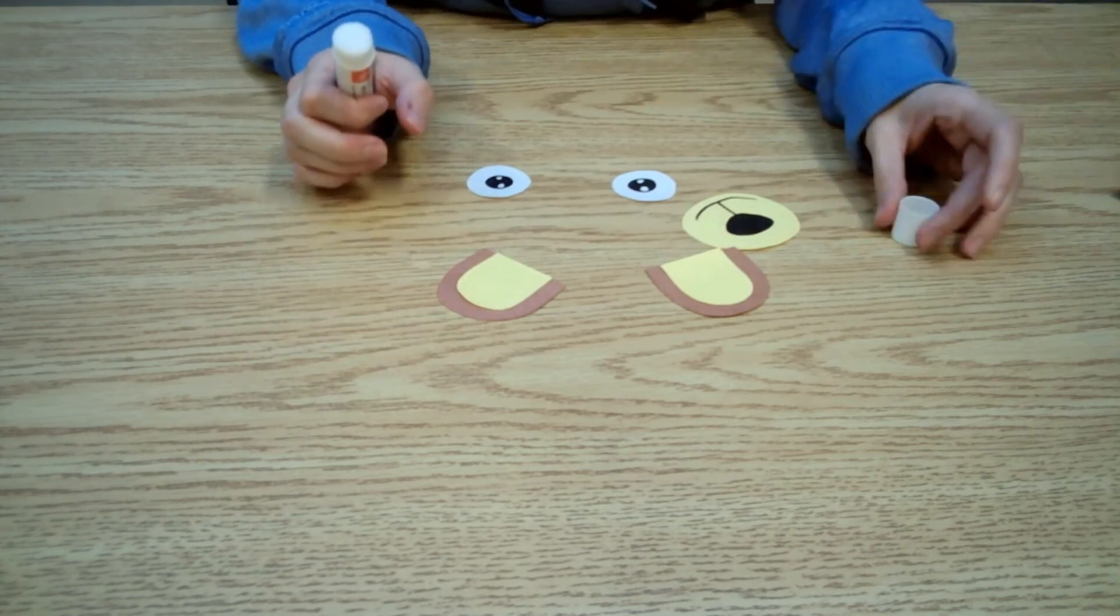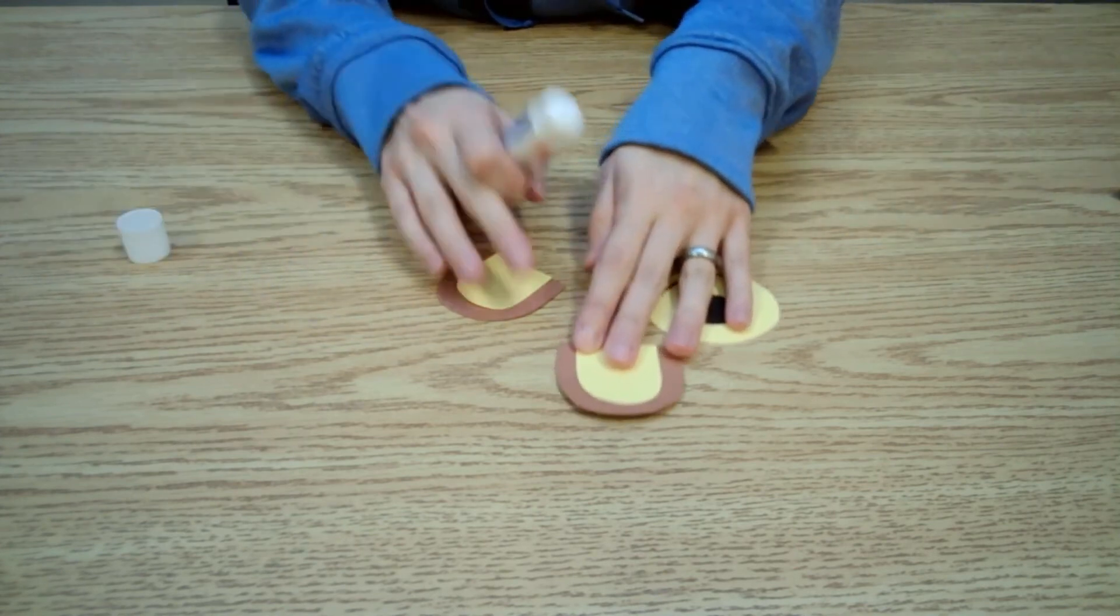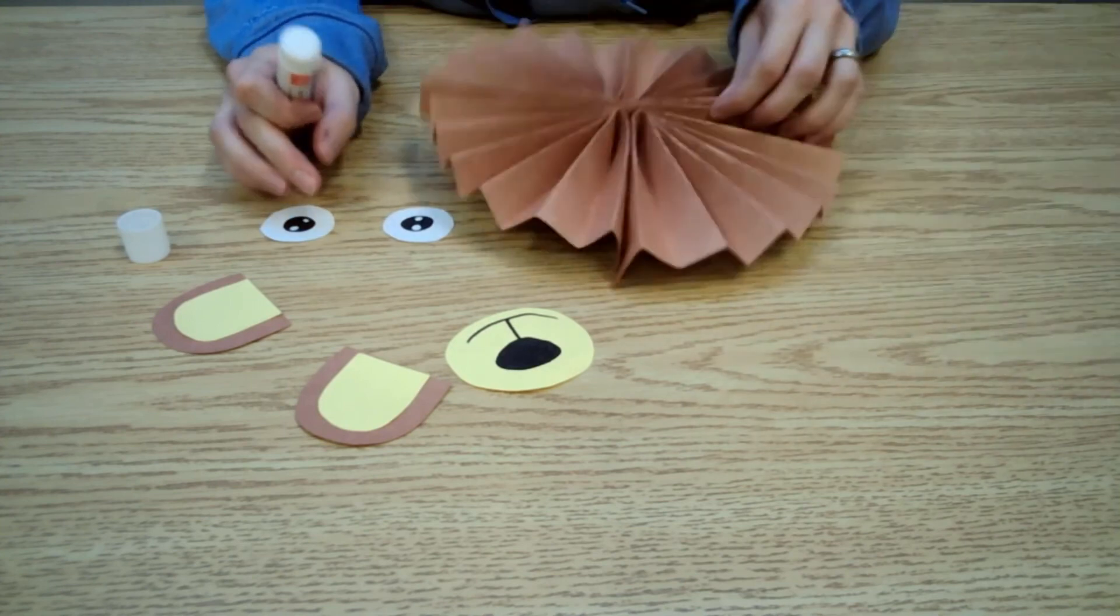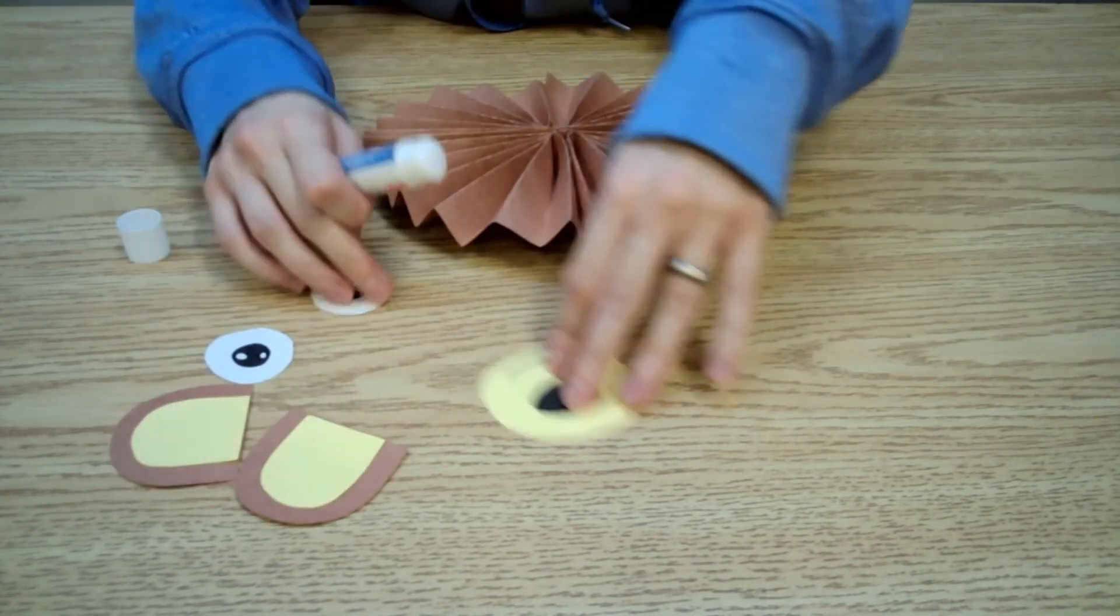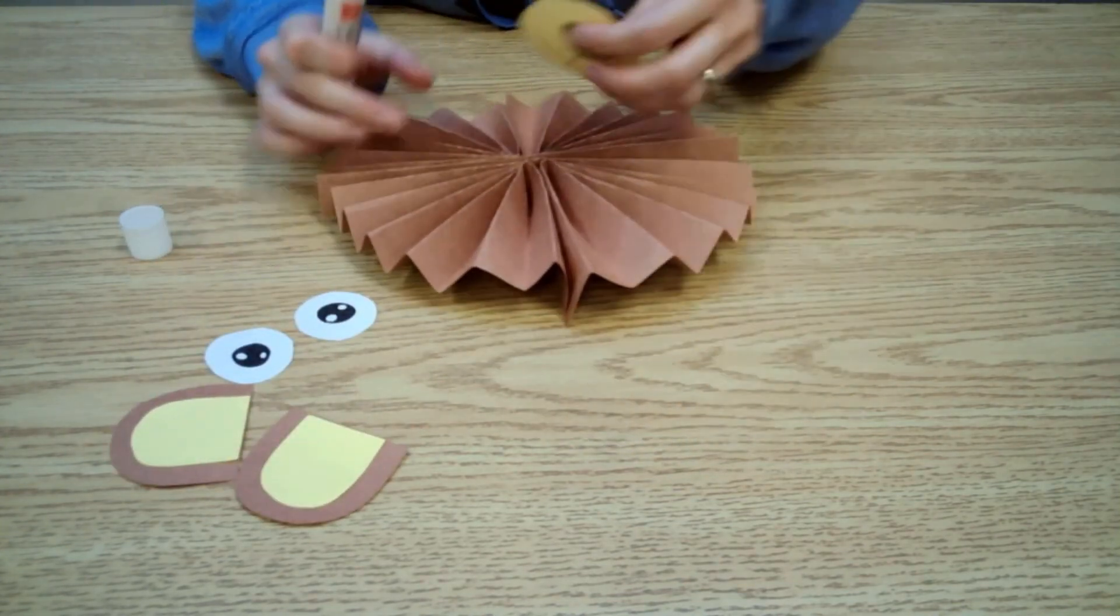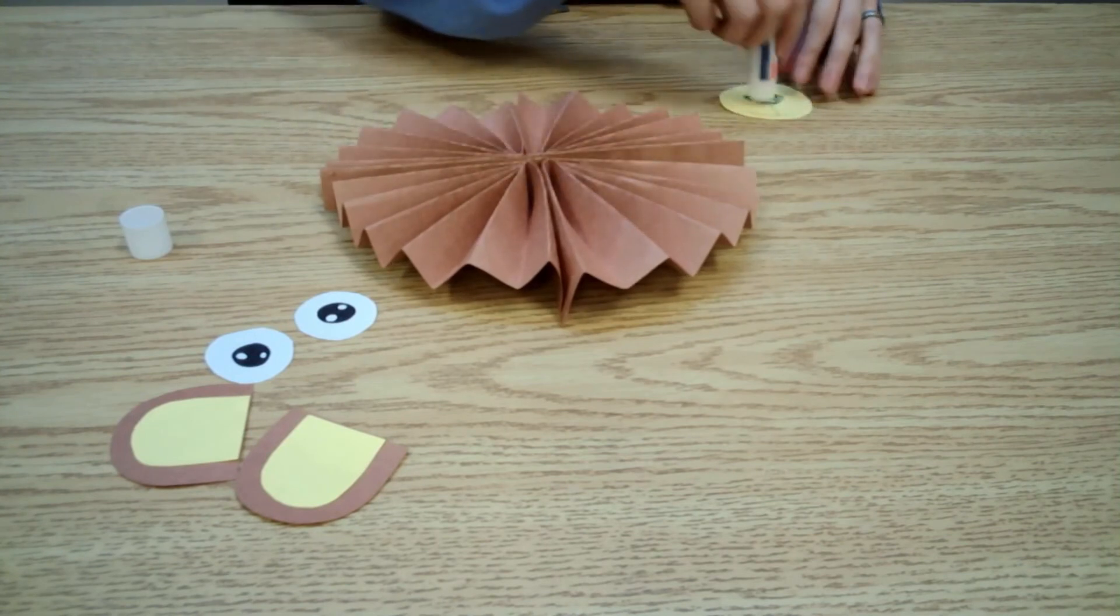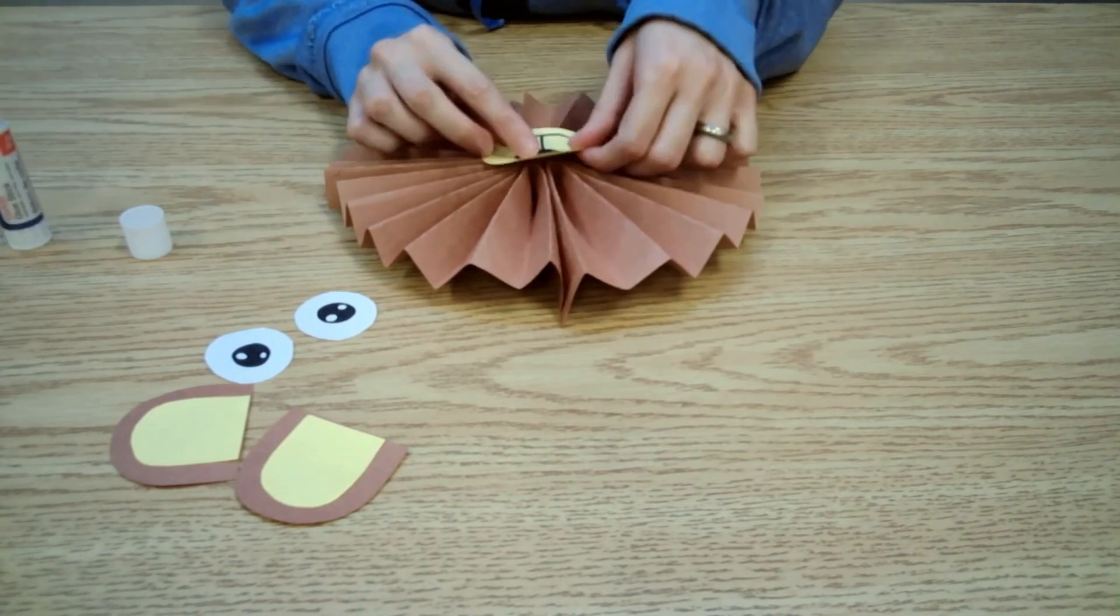Once your shapes are cut out and decorated, glue them onto the fanned paper. If you find that sticking the pieces down with glue isn't working, try using tape instead.